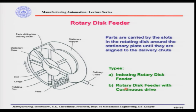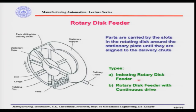There are two types: the indexing rotary disk feeder and the rotary disk feeder with continuous drive. For the indexing type — for example for small cylindrical parts where several parts nest in a slot — it must stop when aligned with the delivery chute so all parts can slide down. With continuous drive, it does not stop at the delivery chute; instead it is used for disk-type parts where one part at a time falls through while the disk keeps rotating.